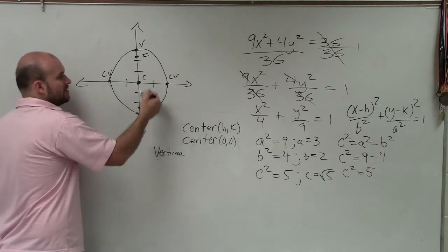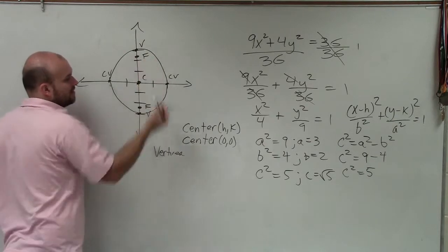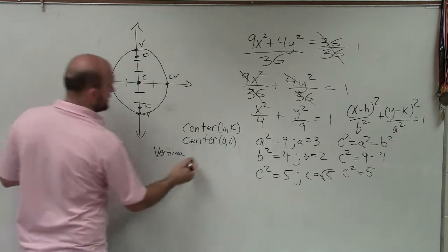So the vertices. Now remember, the vertices, though, since they're on the major axis, I'm just going to go, let's see, it's distance of 3. So it's going to be 0, 3, 0, negative 3.